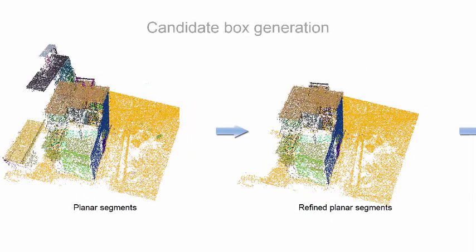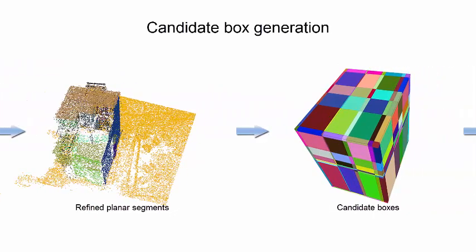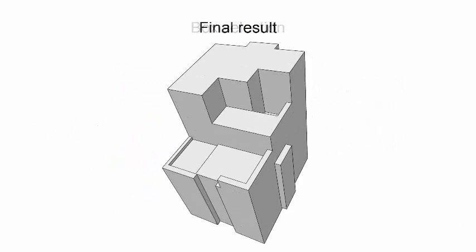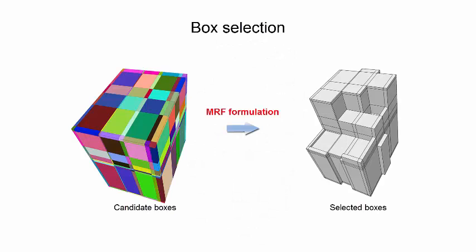After that, the refined planar segments partition the space of the point cloud into a set of boxes. We formulate an optimization problem to select a set of these boxes to represent the geometry of the building. The optimization is based on a Markov random field formulation.